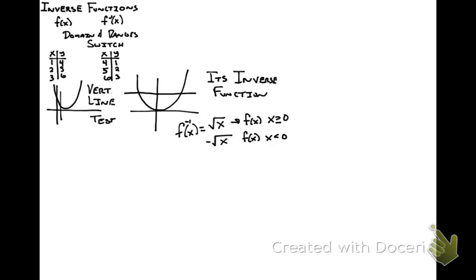We can restrict the function x squared to only when x is greater than or equal to zero. The graph of that restricted form looks like half a parabola, and it has an inverse that is a function. Something to notice is that in this case the function is always increasing. So we can say that on an open interval, if a function is continuous and increasing, then it has an inverse — and in this case its inverse is the square root of x.